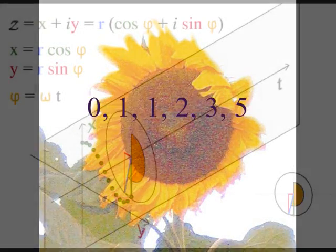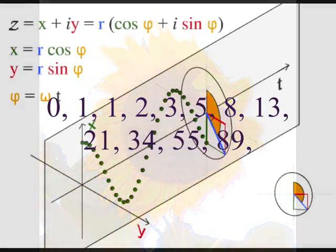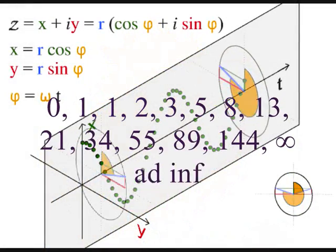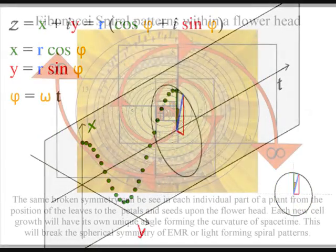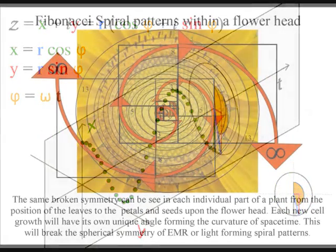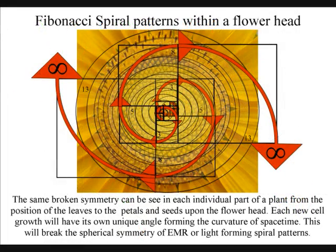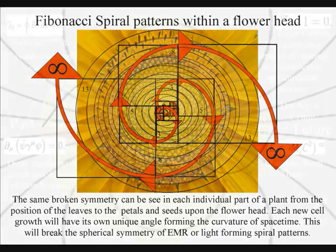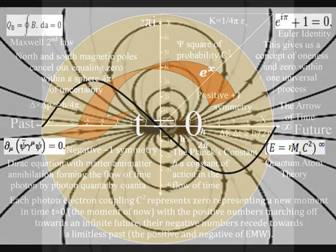In this theory, we have the Fibonacci numbers in nature not because of economy of growth or space, but because time and space is being formed by the geometry, and therefore the mathematics, of this dynamic process.